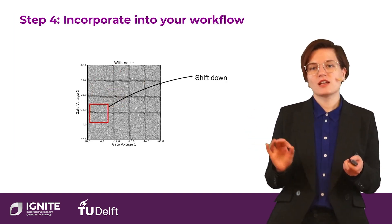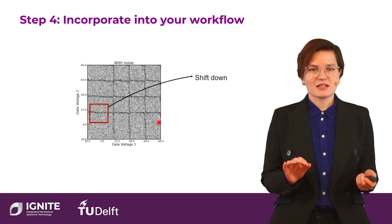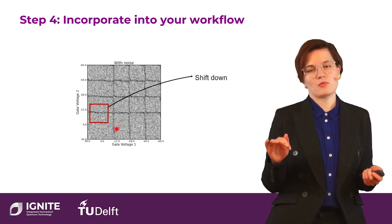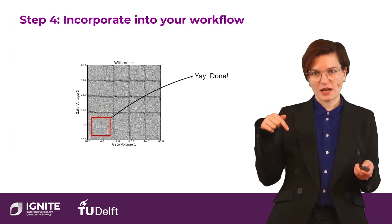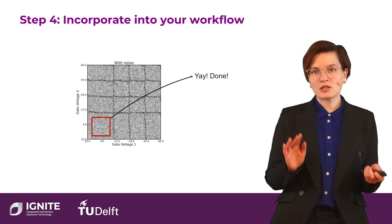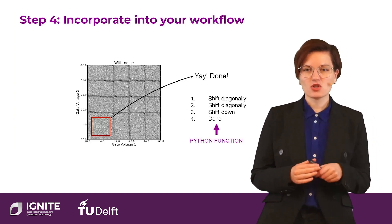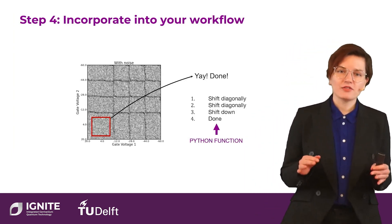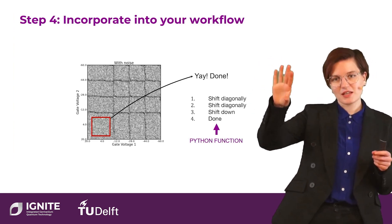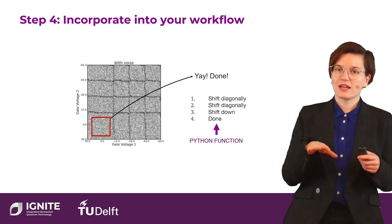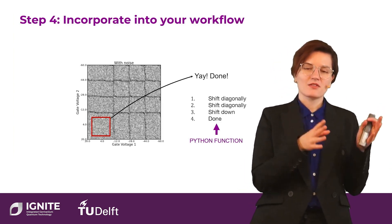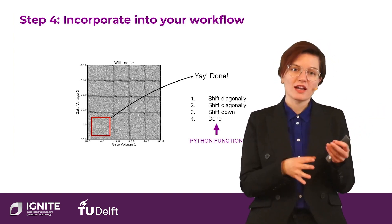The neural network again announces to shift diagonally. Then we take the next square and see that only the horizontal transition remains, so we shift down. Then we measure an empty window and know that we are done. We arrive from some state deep in the charge stability diagram to (0,0) in these four simple steps: measure a subset, classify, move on.